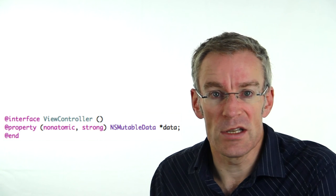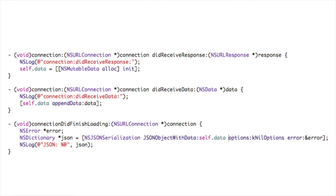When data arrives it comes in several pieces, so we keep appending each chunk to our data object. We use an NSMutableData property, created privately in our class and synthesized, to accumulate the data. In connectionDidReceiveResponse we allocate and initialize the NSMutableData object, clearing old content. In didReceiveData we append each chunk. In didFinishLoading we use the NSJSONSerialization class method jsonObjectWithData to convert the NSMutableData object into an NSDictionary, which we can then work with.